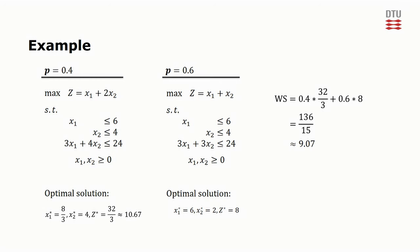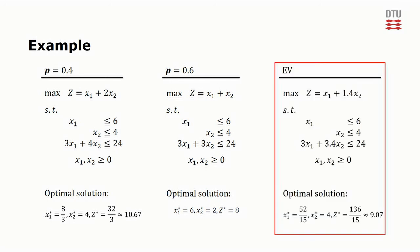The corresponding expected value problem is given by this. The stochastic parameters have been changed to their weighted averages. The corresponding optimal solution value is 136 over 15, meaning that this is an example where WS is equal to EV. The optimal value of x1 is 52 over 15.